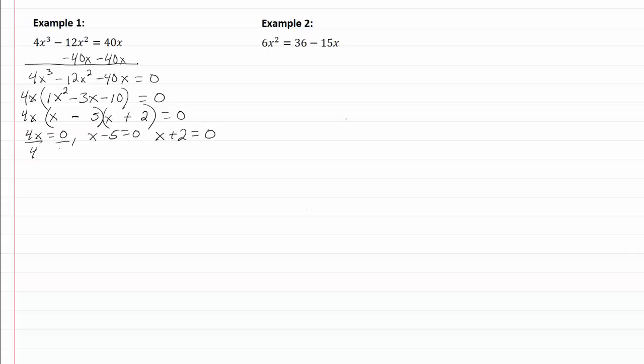Solving the first one we'll divide by 4, we get x = 0. Solving the second one, I'll add 5 to both sides and I get x = 5. Solving the third one, I subtract 2 from both sides, I get x = 2.